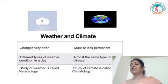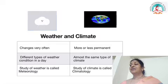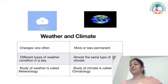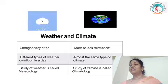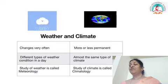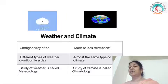In a single day, different types of weather conditions can occur, while climate remains almost the same type over long periods. The study of weather is called meteorology, and the study of climate is called climatology.